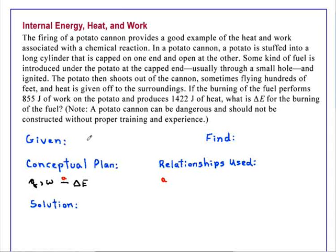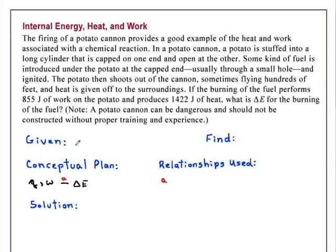If the burning of the fuel performs 855 joules of work on the potato and produces 1422 joules of heat, what is delta E, the energy change, for the burning of the fuel? The burning of the fuel is exothermic since it produces 1422 joules of heat.